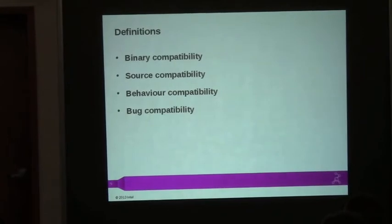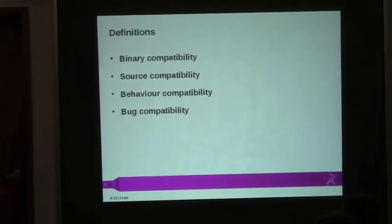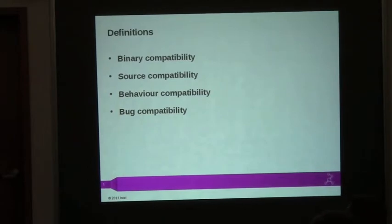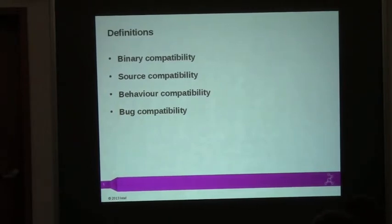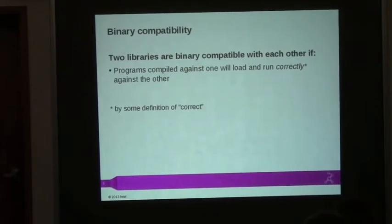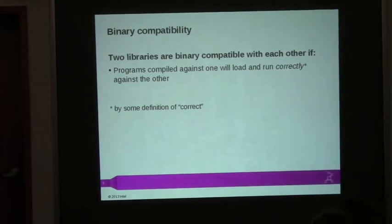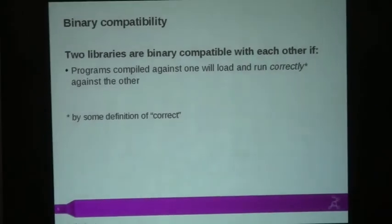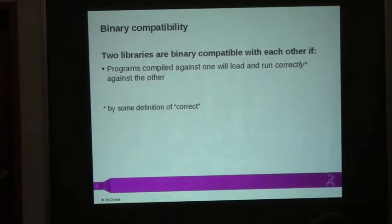Before going further, let's make sure we're talking about the same things. The definition of binary compatibility: two libraries are binary compatible if you take one and replace it with the other, and the programs that were compiled and linked against one will continue to run correctly against the other. By 'correctly' — it means the library loads, no symbol is missing, and if you call virtual functions, you actually end up in the same virtual function as expected.